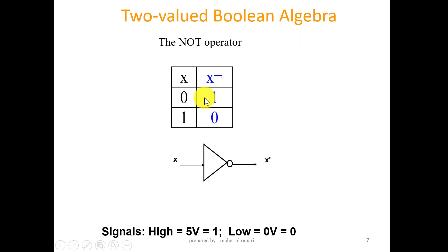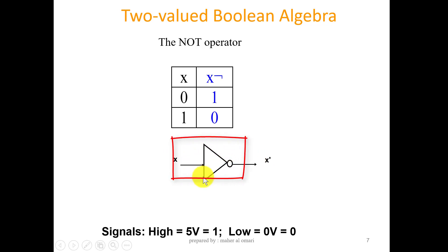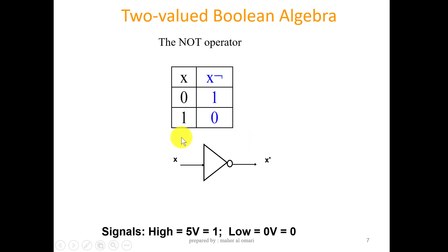The NOT operator is a unary operator. X is inverted. This is called the inverter. If X is one, X-bar is zero. If X is zero, X-bar is one.